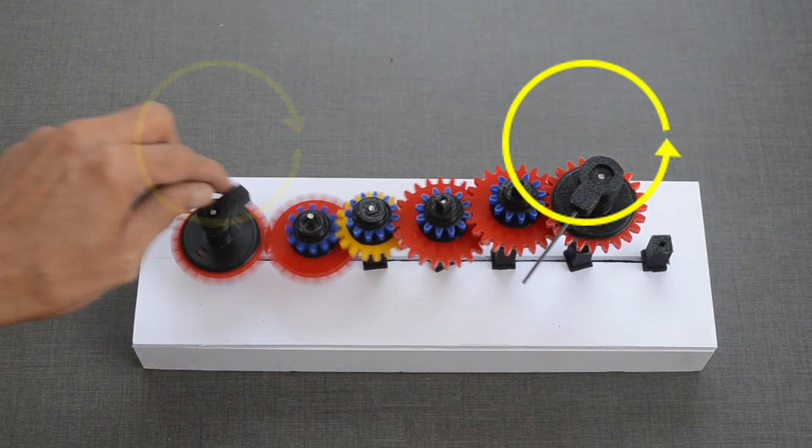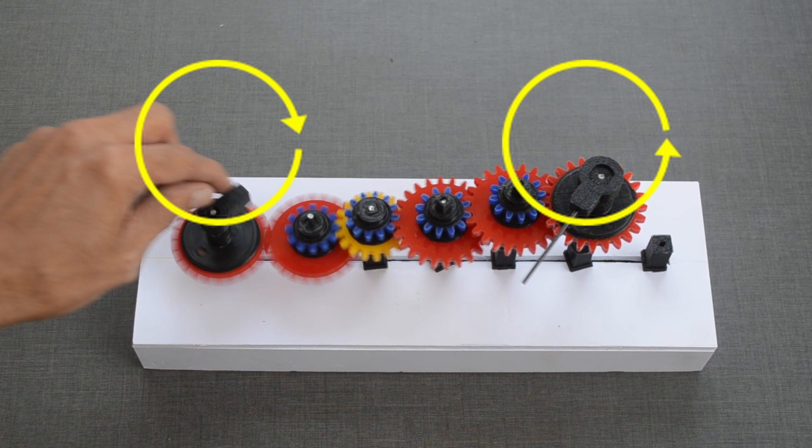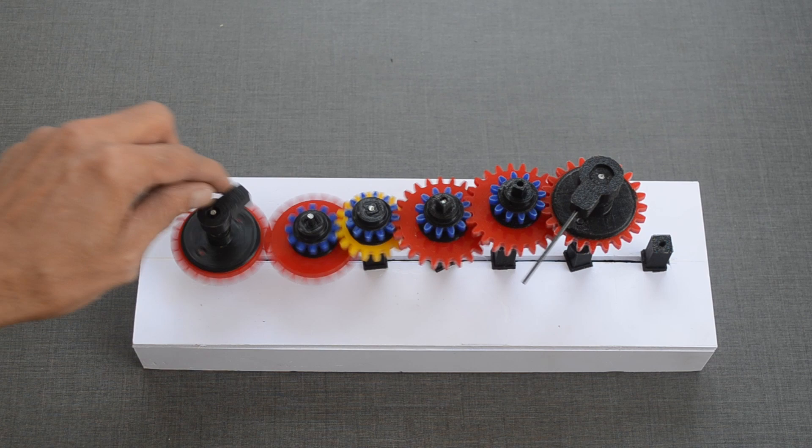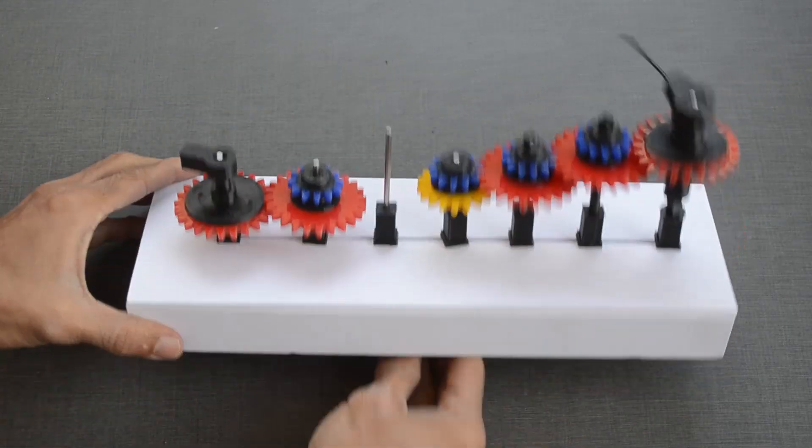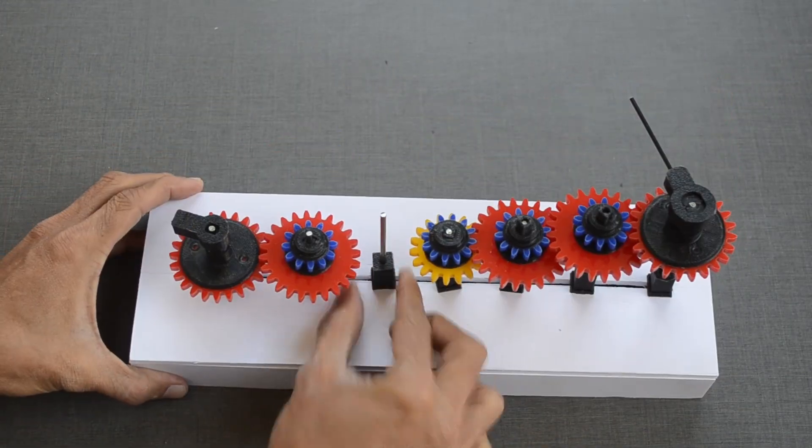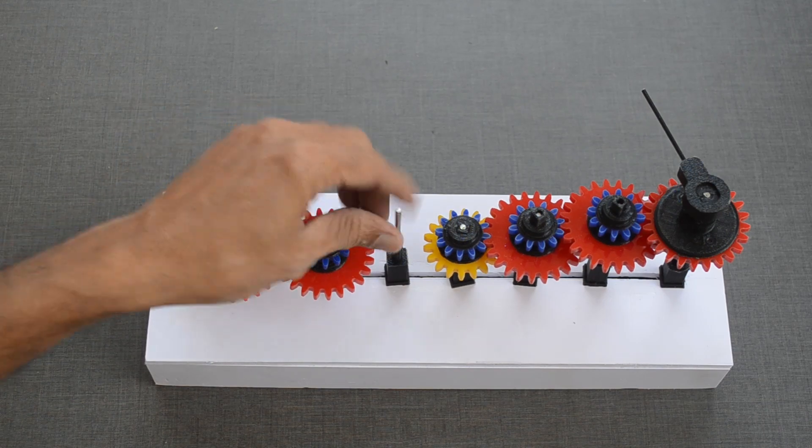But with a small issue: they are not in the same direction. With an even number of axles from start to finish, we get a change in direction. With an odd number of axles, we get the same direction. In our case, it is 7.